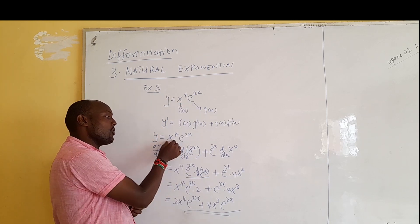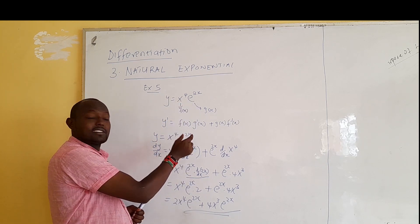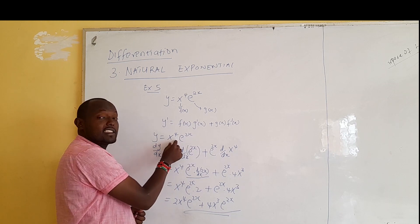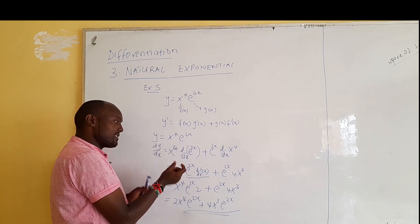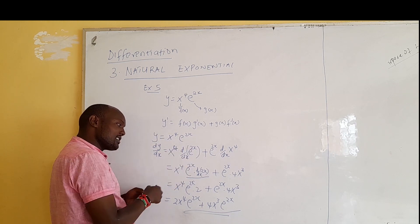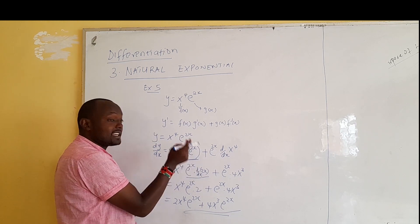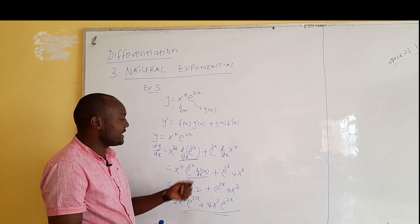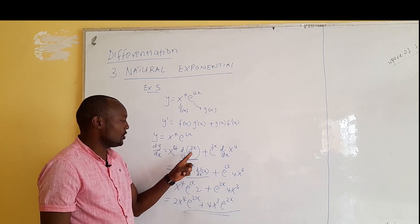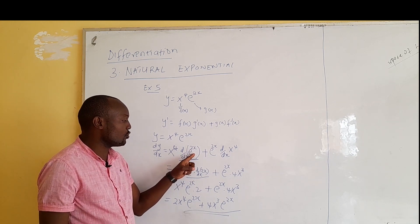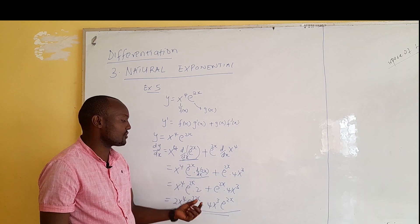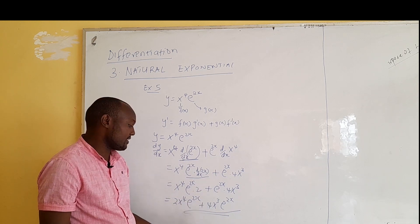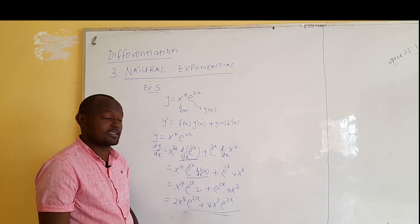It's just the same process: hold one constant, differentiate the other. The key issue is how we differentiate e^(2x), which we already looked at in example 2 — we got 2e^(2x). So we shall now do the last example where we look at the quotient rule.